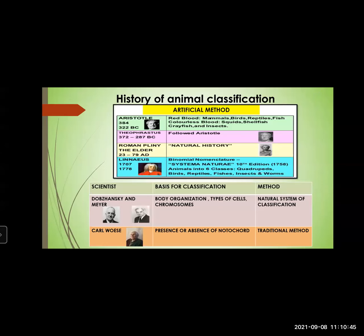Further, later on after the artificial method, the natural system of classification was followed. This natural system was based on criteria like body organization, types of cells, chromosomes, and biochemical properties. It was brought into practice and used by Dobzhansky and Mayr. And then recently, another scientist Carl Woese also proposed an animal classification called the traditional method. This traditional method of animal classification is based on the criterion of presence or absence of notochord.